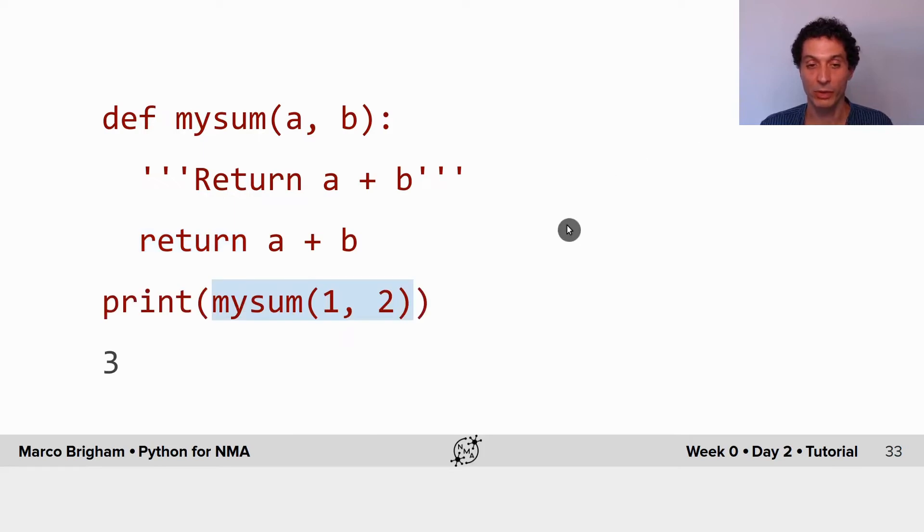So we call the function just by the name of the function and its arguments and it returns the output.